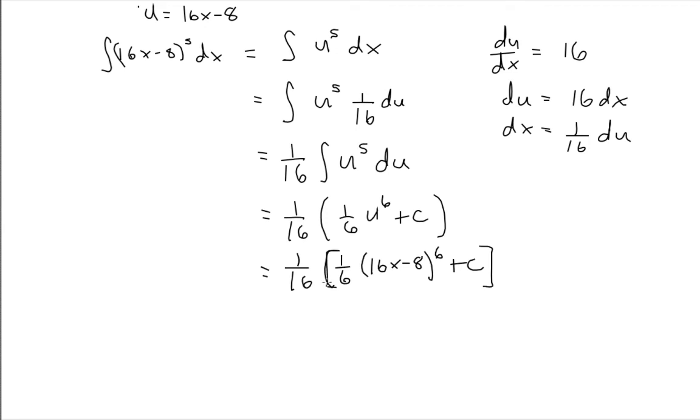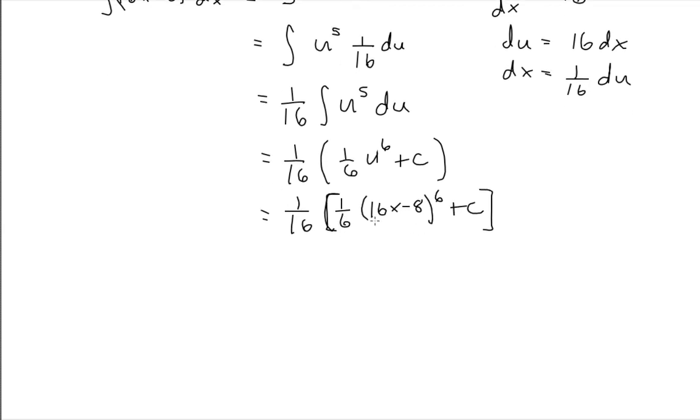I'll make these square brackets. Now I can simplify this a little bit. I can multiply the 1 over 16 into this. So what I end up with is 1 over 96 times 16x minus 8 to the power of 6.